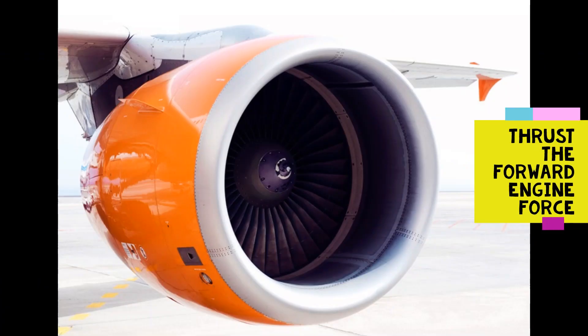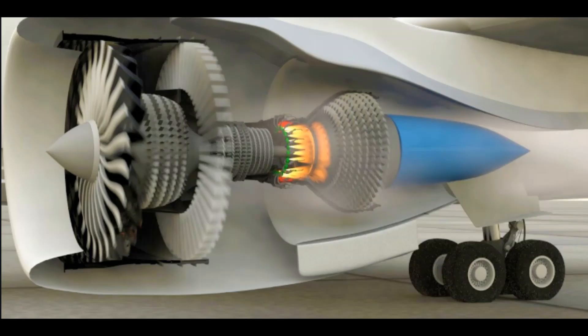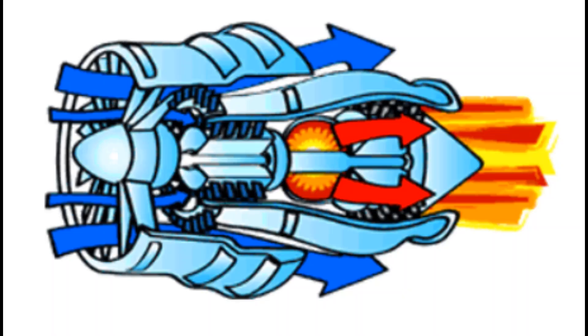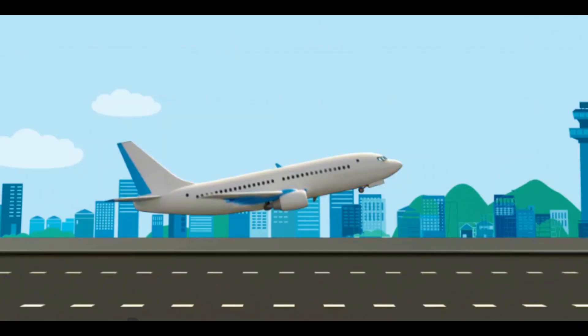Thrust is the force produced by engines. The engine sucks the air in. This air is mixed with fuel inside the engine and then pushed out. Temperature and pressure increase massively inside the engine. And when air is pushed out, air pressure outside drops. This air pressure difference pushes the aeroplane forwards.